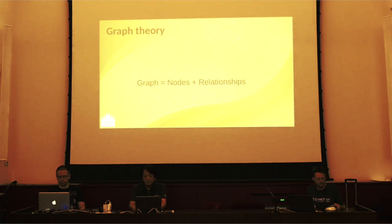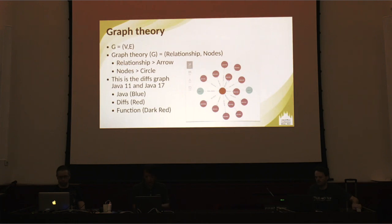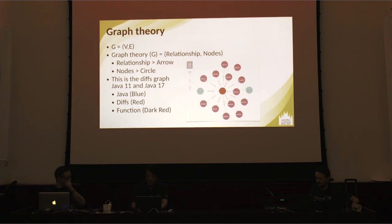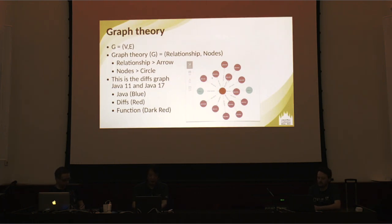Let's talk about Graph Theory. A graph equals relationships and nodes — just three components. A relationship is an edge, and a node is a circle — red, blue, or dark red. This graph shows a diff between Java 11 and Java 17. So the diff's function is here — you can see the dark red function.